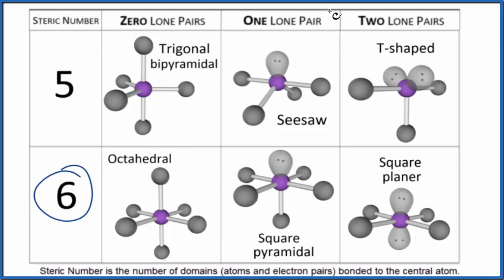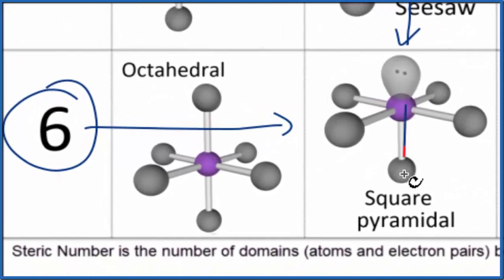So as we go down and we go over, that's the square pyramidal molecular geometry. The bond angles here will be approximately 90 degrees. So that's the molecular geometry and bond angles using this chart and steric number.